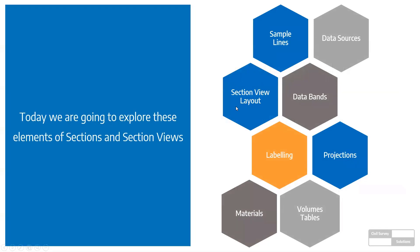If this is starting to sound familiar to profile views or profiles, that's because it is. Their nature is almost identical to how profiles work. Profiles are along your alignment; sample lines control it across the alignment and give you your section views for a variety of sections along your model. There's no explicit agenda — we're just going to look at the different elements and unpack how you create your sections and section views.